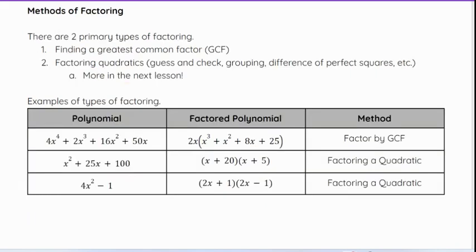So with that, there are some methods of factoring. There are two primary methods of factoring, and one of those will break down a little bit more in the next unit. But the first one is finding a greatest common factor, a GCF. And that can be done with a polynomial of any degree.